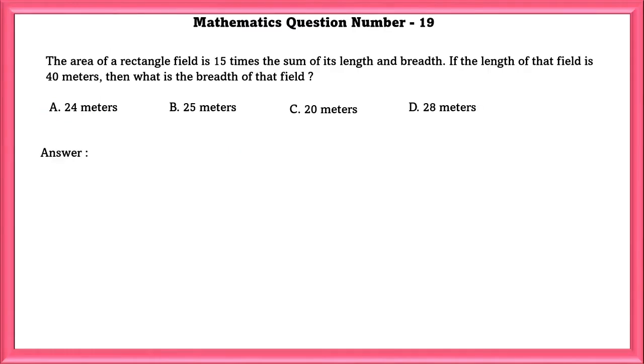Mathematics Question Number 19. The area of a rectangular field is 15 times the sum of its length and breadth. If the length of the field is 40 meters, then what is the breadth of that field?